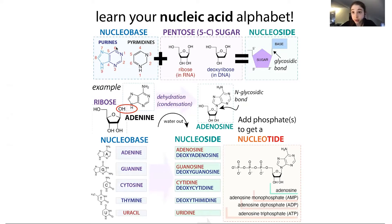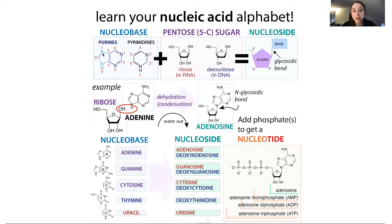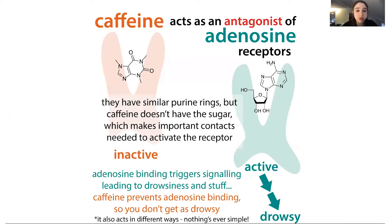Caffeine is a purine. You might remember from your nucleotides — your DNA and RNA letters — that their unique part is a nucleobase, which can be either a purine or a pyrimidine. Purines have two rings, and if we look at the structure of caffeine, we see it has these two rings and looks kind of similar to the nucleoside adenosine.